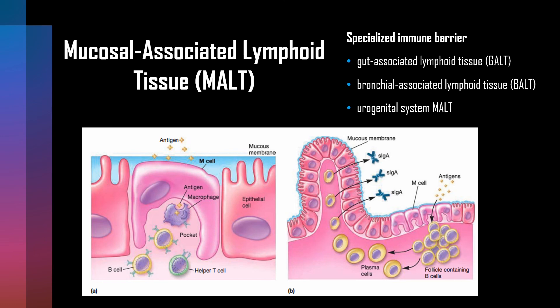In the second figure, antigen is transported by the M cell to organized lymphoid follicles containing B cells. The activated B cells mature into plasma cells, which produce antibodies that are released and react with the antigen that caused their production.